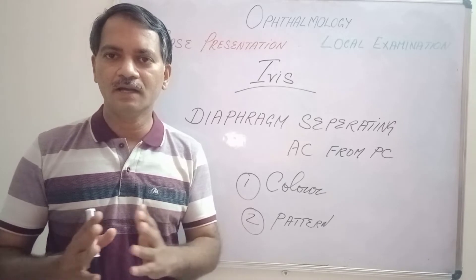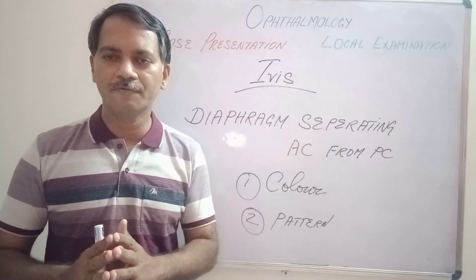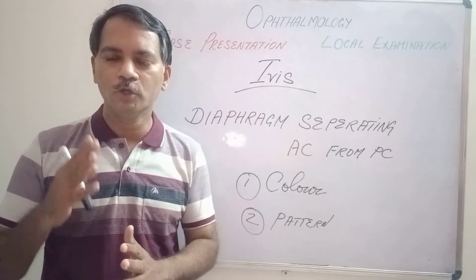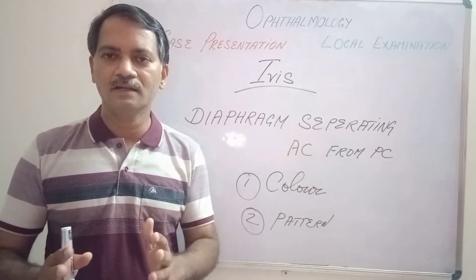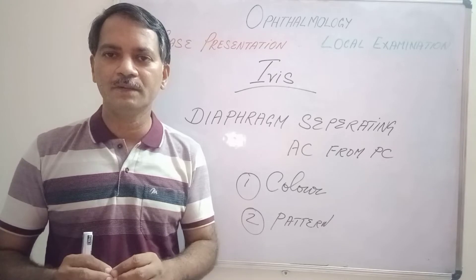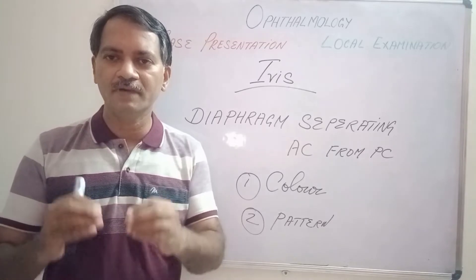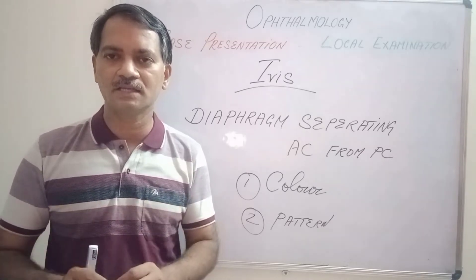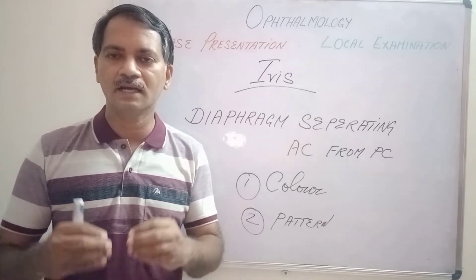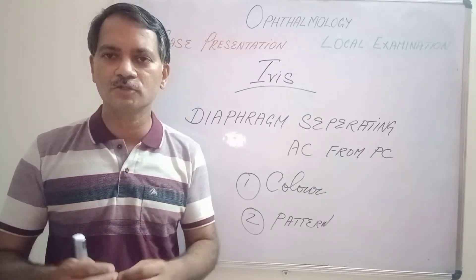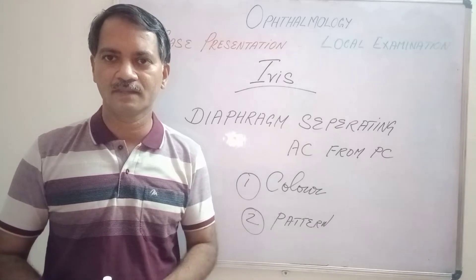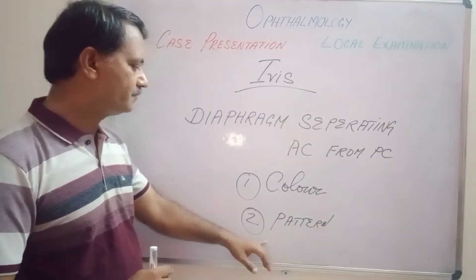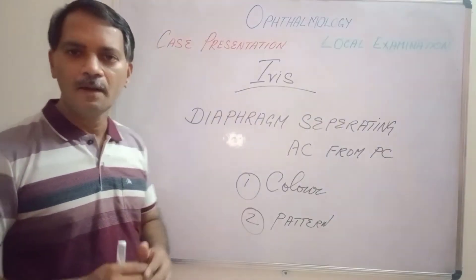If the people are from European countries, then the melanin pigments are going to be very less and the color of the iris is going to be lighter. Next is the pattern of the iris.